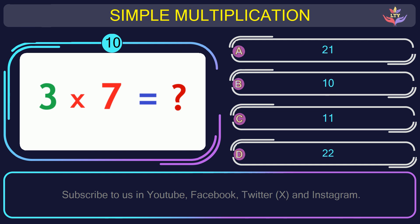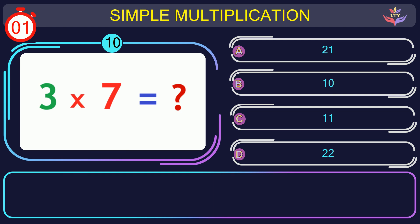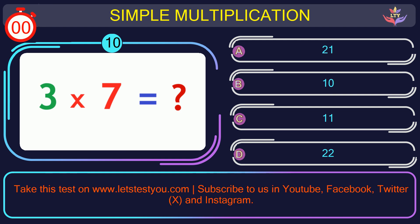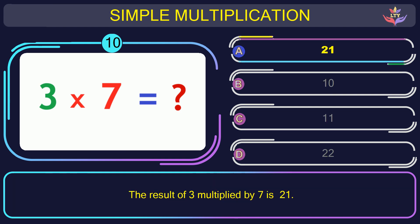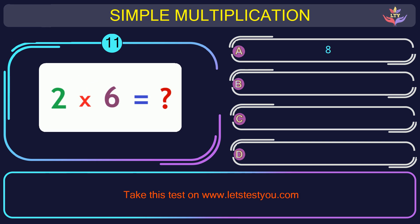Question number 10: what is the result when you multiply 3 by 7? The correct answer is option A: 21. The result of 3 multiplied by 7 is 21.